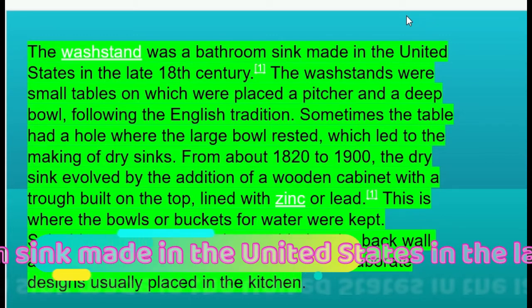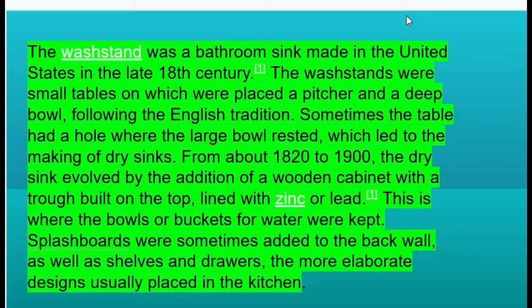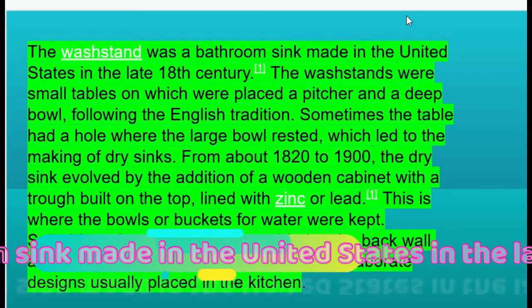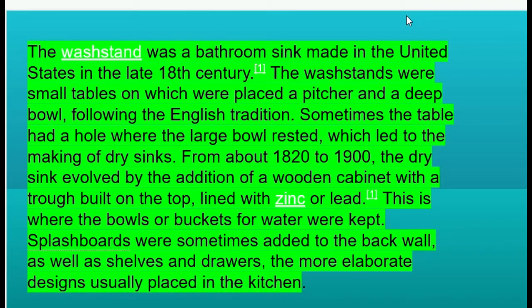This led to the making of dry sinks from about 1822 onward. The dry sink evolved by the addition of a wooden cabinet with a top lined with the sink area and a lid. This is where bowls or buckets for water were kept.